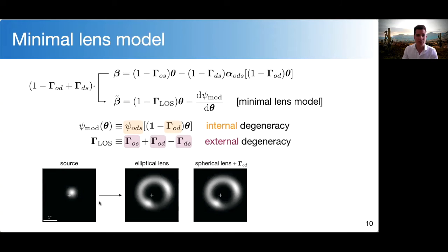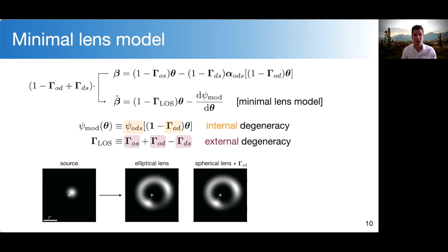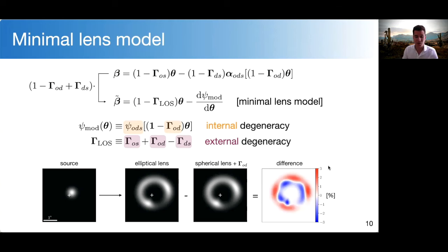Let me be more specific with a concrete example. I'm showing the images produced from a Gaussian source. The middle image is produced by an elliptical lens in the absence of any line-of-sight perturbation. The right-hand-side image is produced by a spherical lens — with no ellipticity — but in the presence of foreground perturbations that produce a shear. You can see it's impossible to distinguish by eye between those two images — they differ by only about three percent maximum in surface brightness, so it is very unlikely we could ever distinguish in practice between the ellipticity of a lens and a foreground shear.